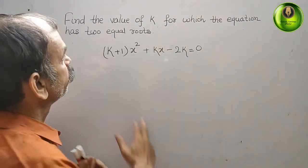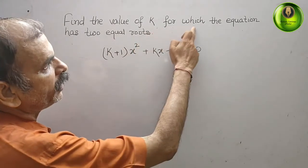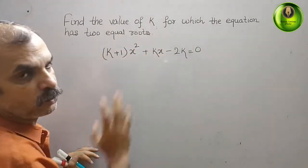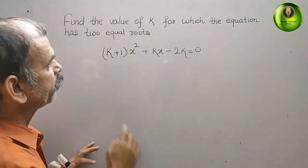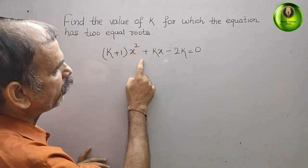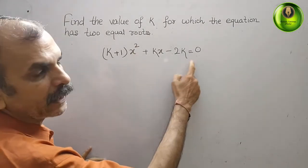Your question is, find the value of k for which the equation has two equal roots. What they have given: (k+1)x² + kx - 2k = 0.